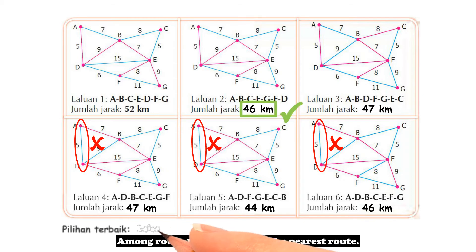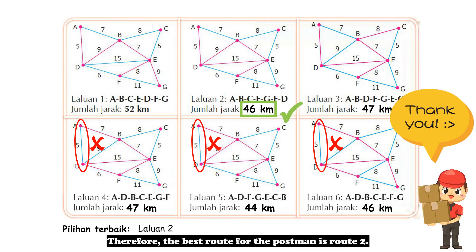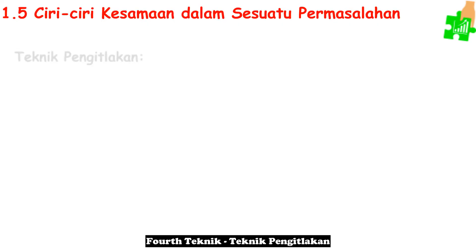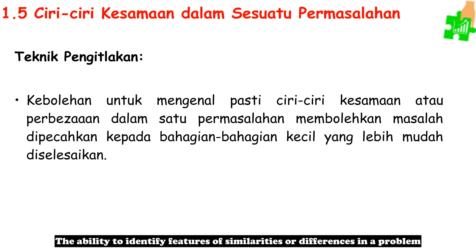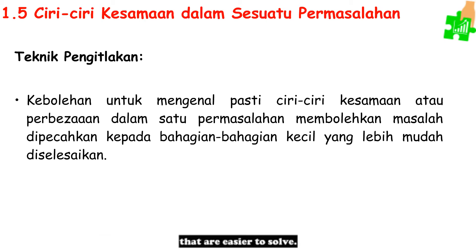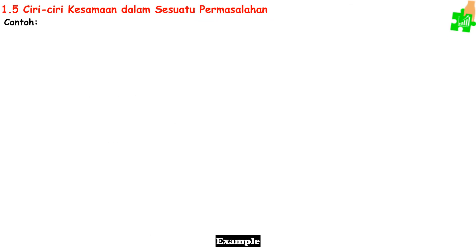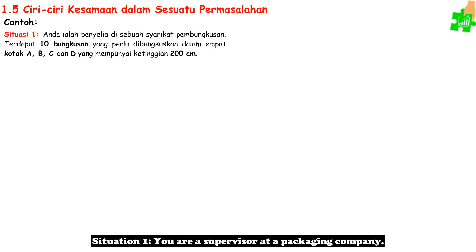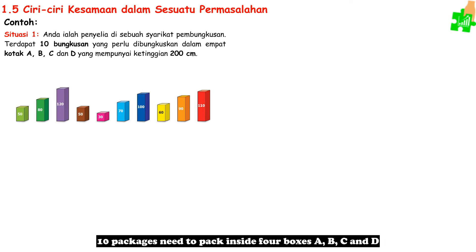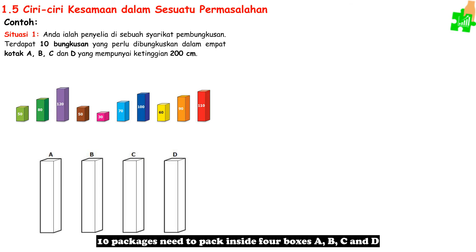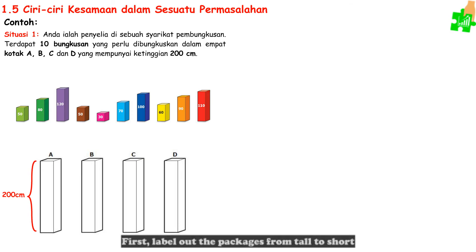Fourth technique — Teknik Pengiklakan (generalization). The ability to identify features of similarities or differences allows a problem to be broken into smaller parts. Two different problems can have the same similarities and use the same problem solution. Example, Situation 1: you are a supervisor at a packaging company. Ten packages need to be packed into four boxes A, B, C, and D, each with a height of 200 cm. First, label the packages from tallest to shortest.